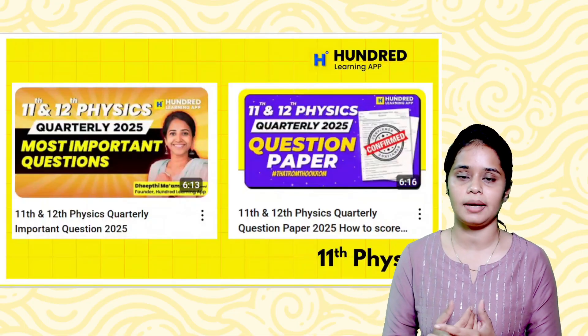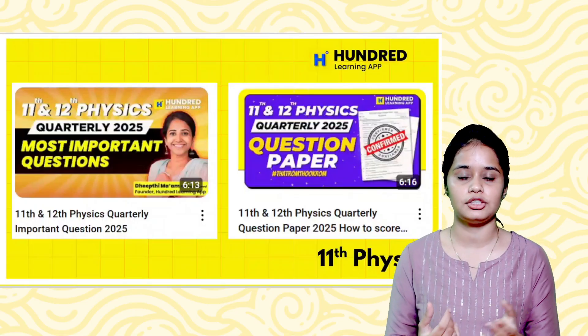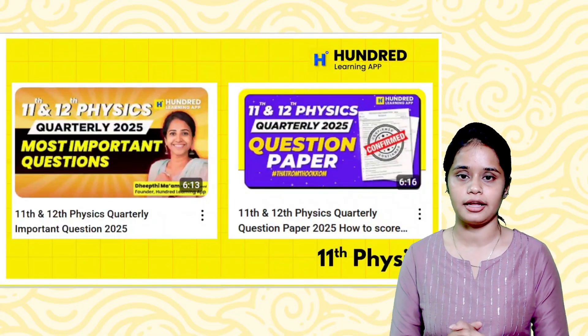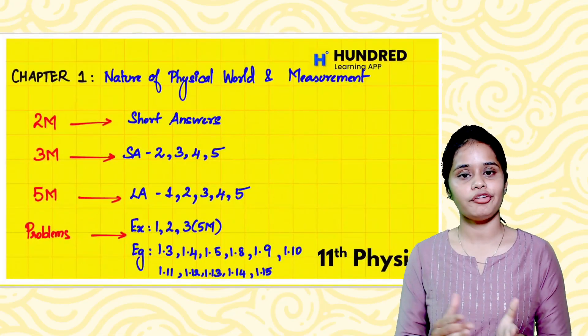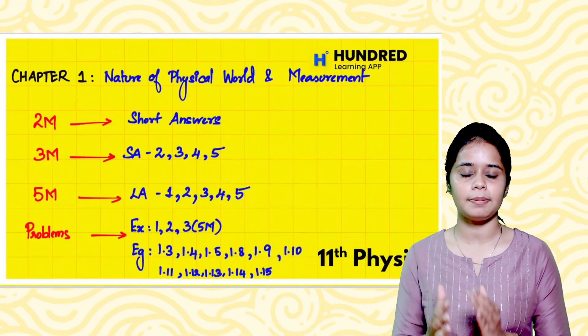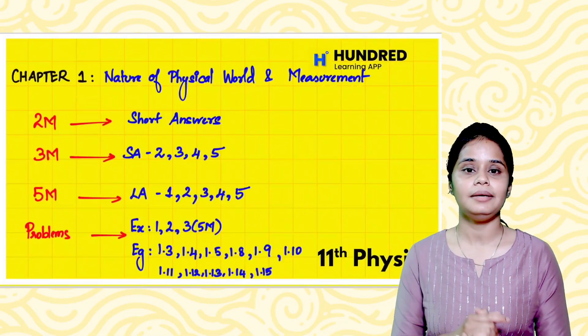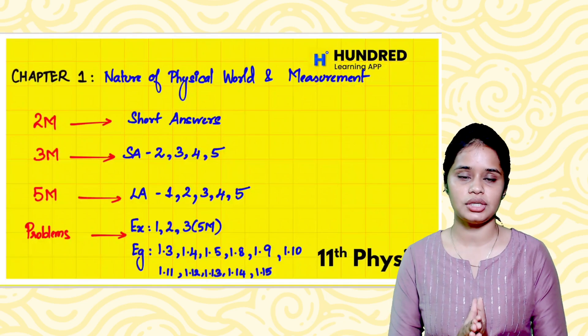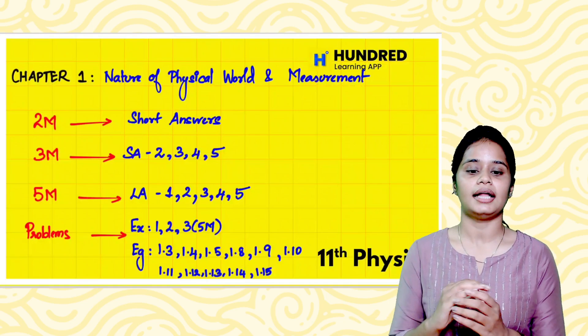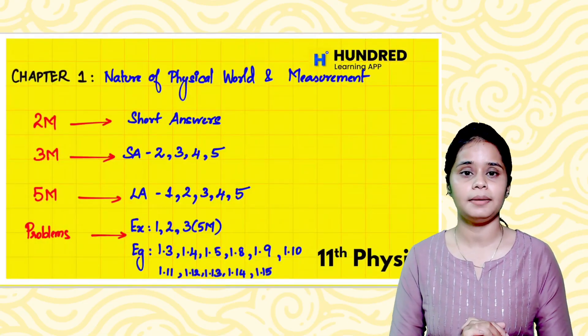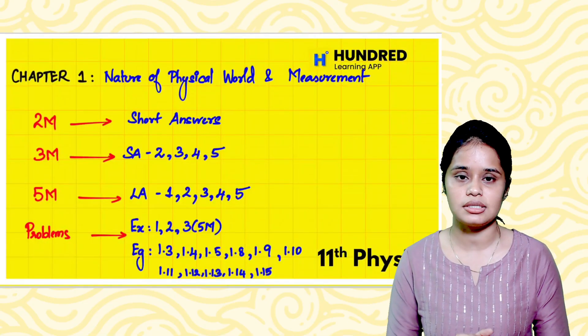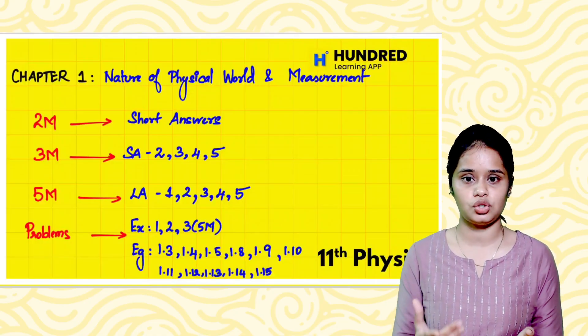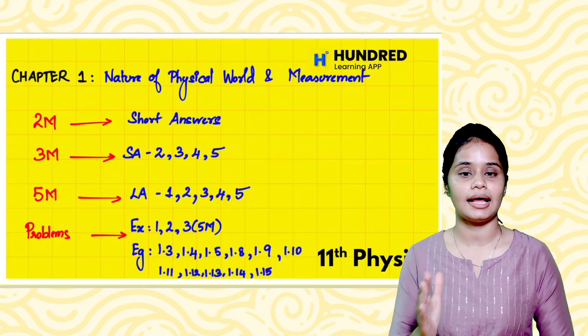What chapters should you study? First, Nature of Physical World and Measurement. In this chapter, limitations of dimensional analysis and using dimensions to check correctness of equations - these questions are very important. If you understand the types of errors, you can answer these questions.